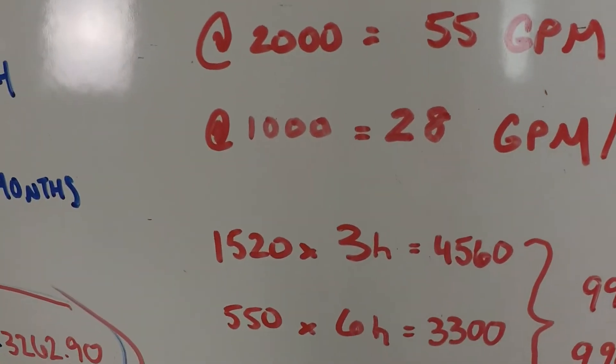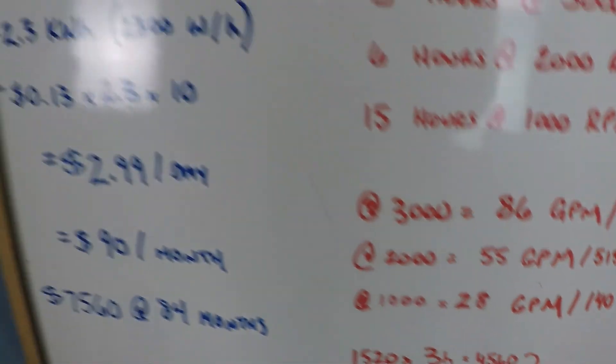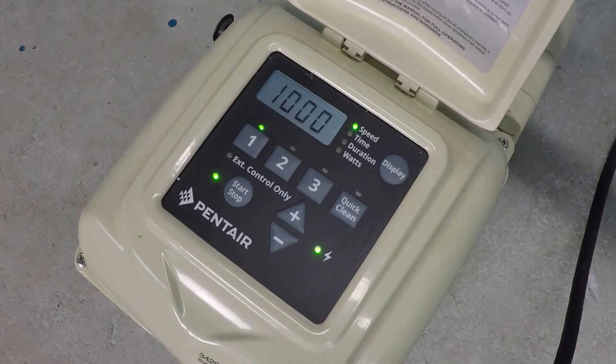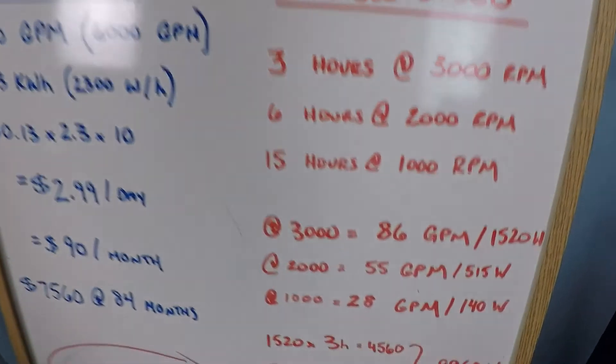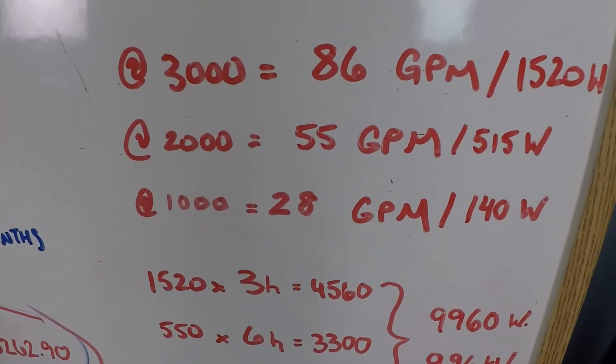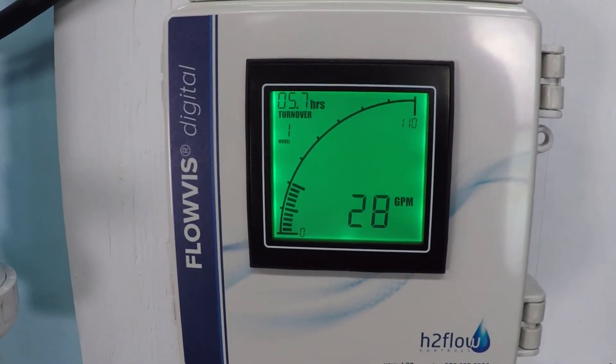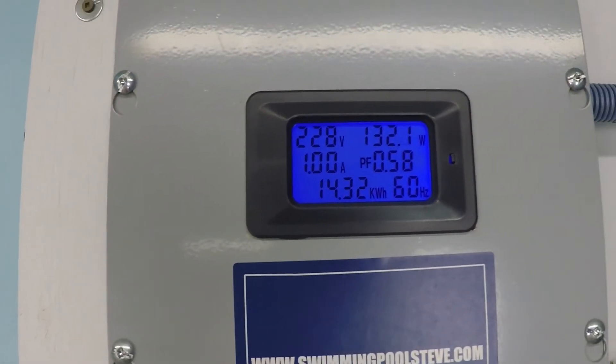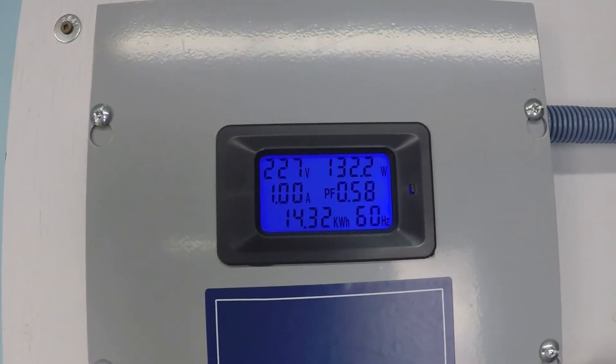And then we'll jump down to 1,000, and we should be seeing about 28 gallons per minute, and 140 watts. There we go. 28 gallons per minute. And we're even well under here. 132 watts, 1 amp even.